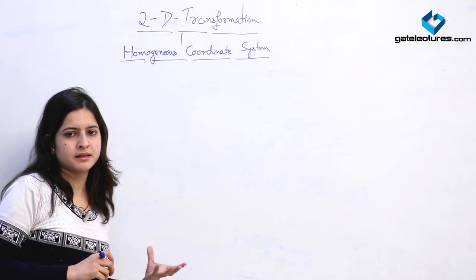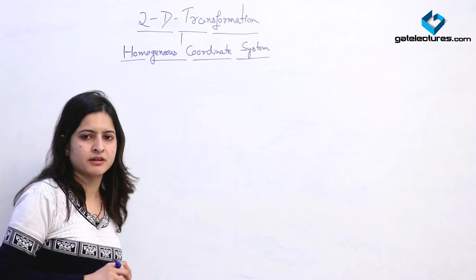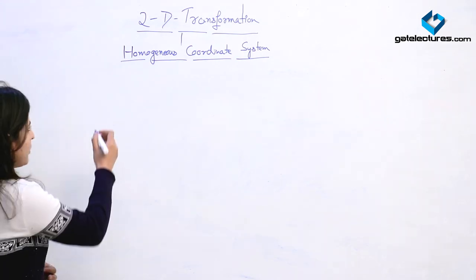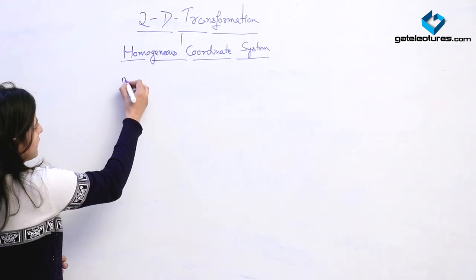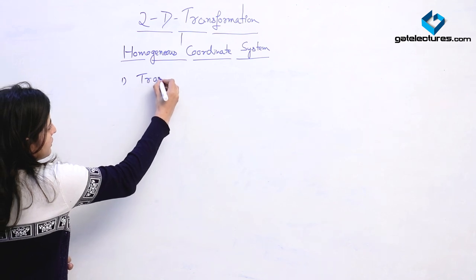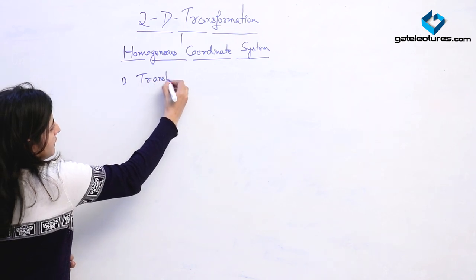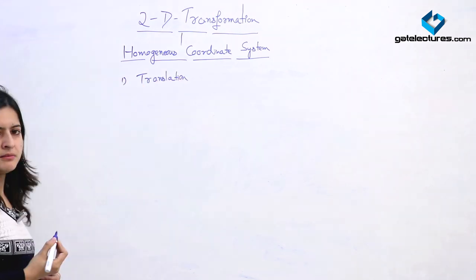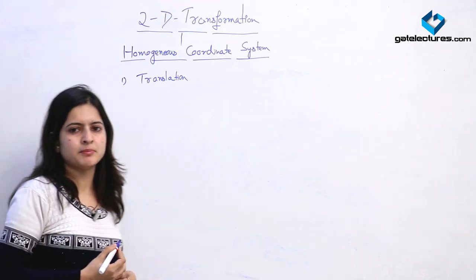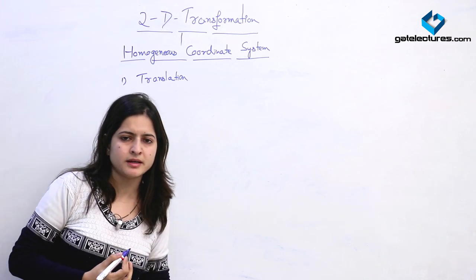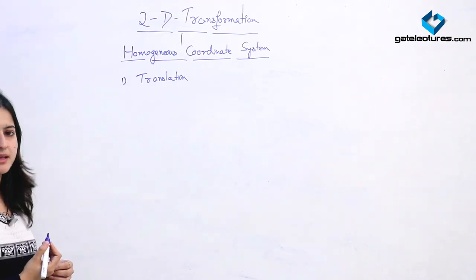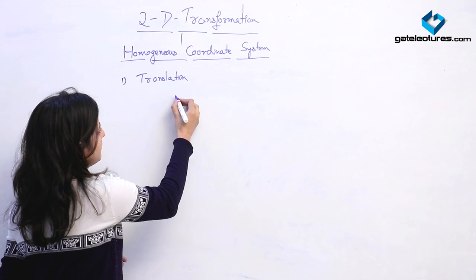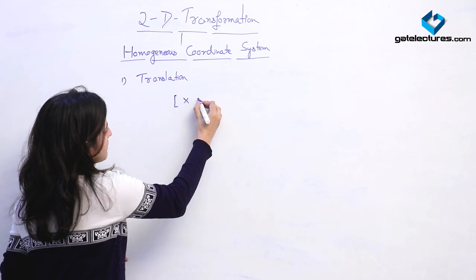Here I am representing the 3×3 representation of the operations we have seen earlier. The first operation we discussed was translation. Translation means we are changing the position of the object, and here I am representing it with the help of a 3×3 matrix.